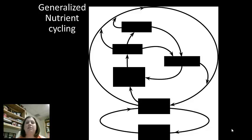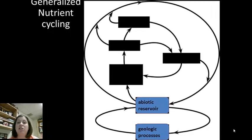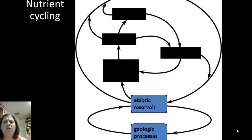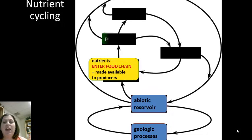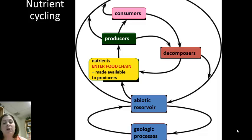Let's talk about how these nutrients come into the cycle. First, we start with the abiotic reservoir. These are caused by geological processes like the rock cycle, the water cycle, things like that. They're going to enter the food chain through the producers, which are going to feed consumers. The decomposers are going to return things back to the food chain, but they're also going to return parts of these producers and consumers back to the abiotic reservoir. So, decomposers are extremely important in this.